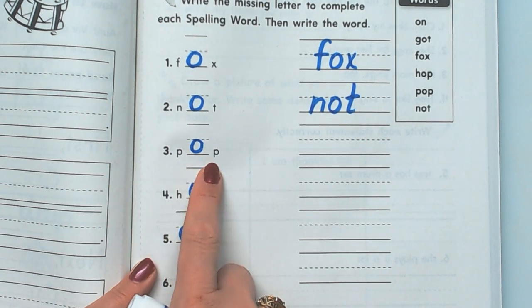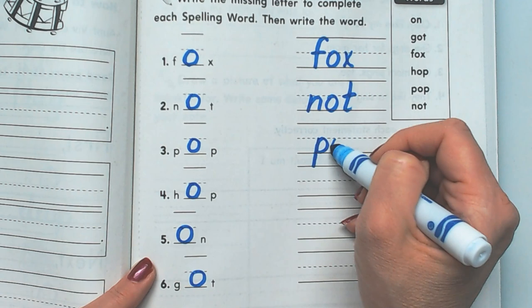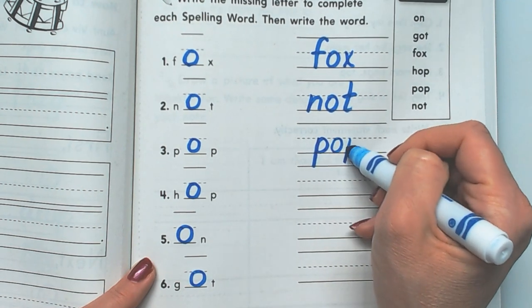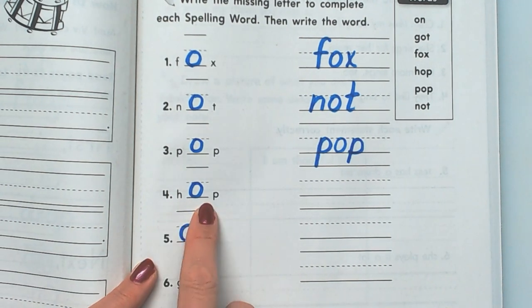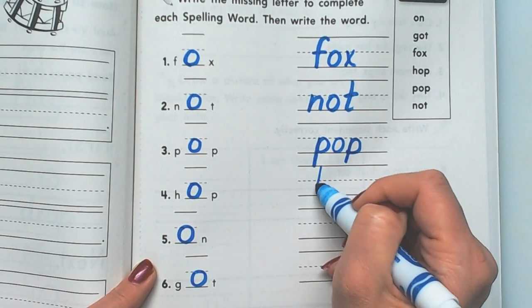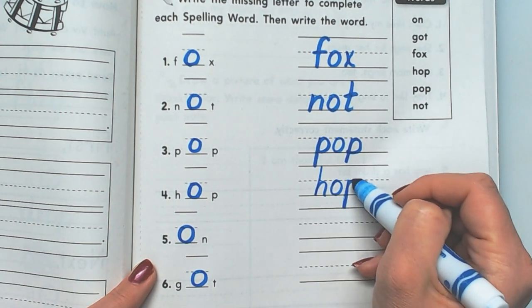Now we're going to spell pop. P, it's made with a P, ah, P. Pop. Hop. H, ah, P. Hop.